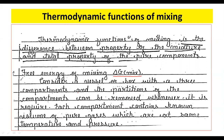Let us consider a vessel or a box with three compartments — one, two, and three. The partitions between the compartments can be removed whenever required. Each compartment contains a known volume of a pure gas, and all compartments are at the same temperature and pressure.